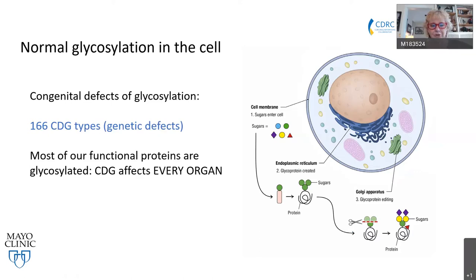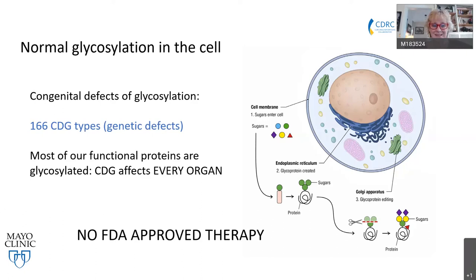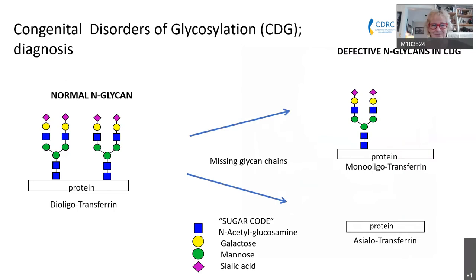Congenital disorders of glycosylation are a large group of genetic defects in this pathway. This complex disorder group accounts for more than 160 different CDG types, all with different genetic backgrounds. It's a very important disorder group, as most of our functional proteins are glycosylated. CDG affects every organ, and for 166 CDG types, there is no FDA-approved therapy.